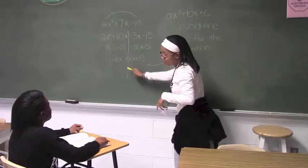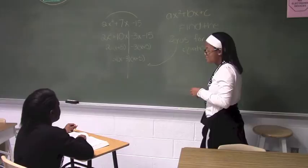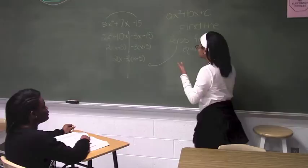Now we're trying to find the zeros in the equation. Do you know how to find the zeros? Oh, you have to do X minus 3 and X plus 5 and then equal both of those to zero. Yes, you got it.